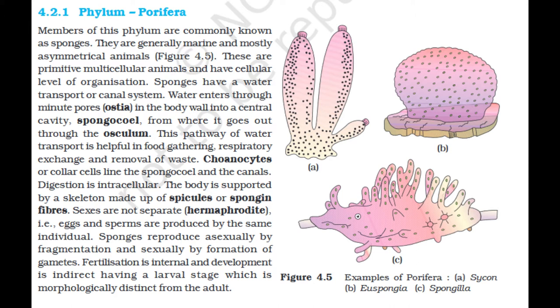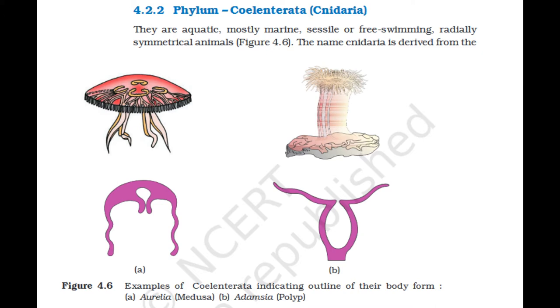This pathway of water transport is helpful in food gathering, respiratory exchange, and removal of waste. Choanocytes or collar cells line the spongocoel and the canals. Digestion is intracellular. The body is supported by a skeleton made up of spicules or spongin fibers. Sexes are not separate — they are hermaphrodite, i.e., eggs and sperms are produced by the same individual. Sponges reproduce asexually by fragmentation and sexually by the formation of gametes. Fertilization is internal and development is indirect, having a larval stage morphologically distinct from the adult. Examples: Sycon, Spongilla (freshwater sponge), and Euspongia (bath sponge).